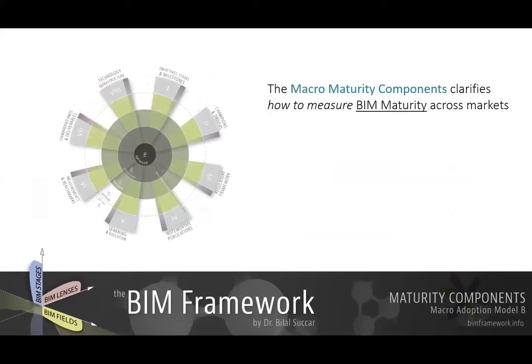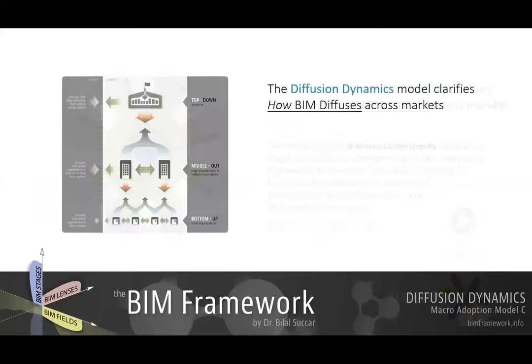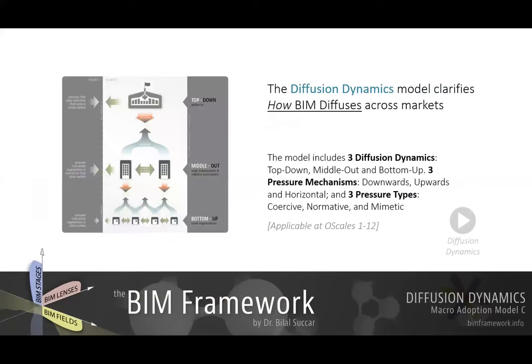The second model, or model B, called the macromaturity components, clarifies how to measure BIM diffusion. It has eight components and will also be covered in a separate video, which you can jump to directly. Model C clarifies the dynamics of BIM diffusion — how BIM diffuses across markets. You can also jump to that model directly.